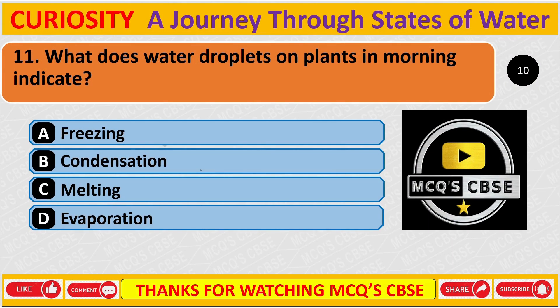What do water droplets on a plant in the morning indicate? The correct answer is B: Condensation.